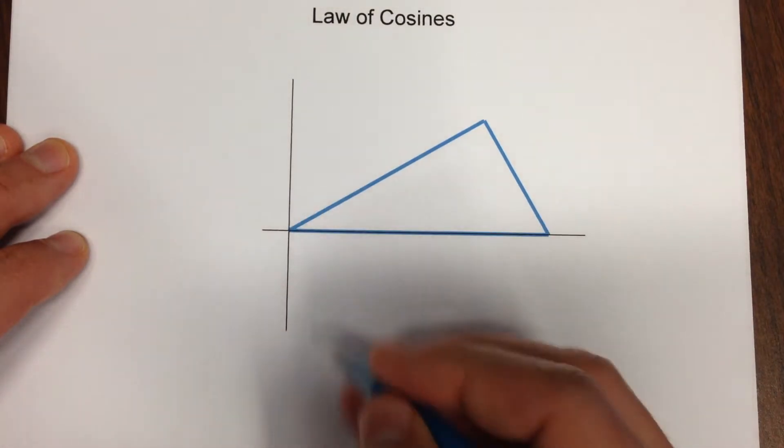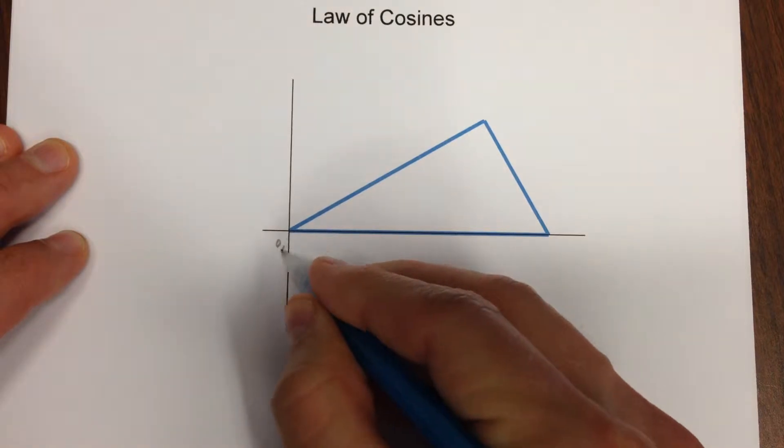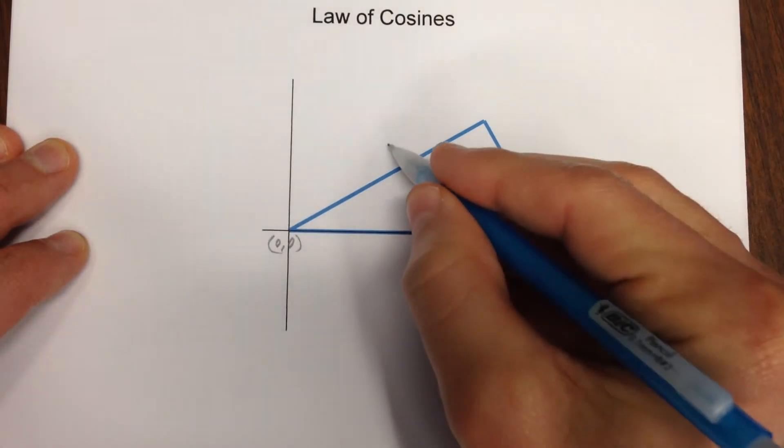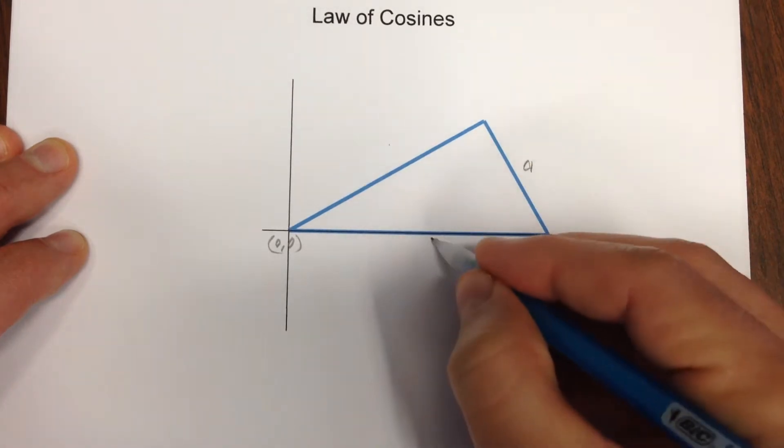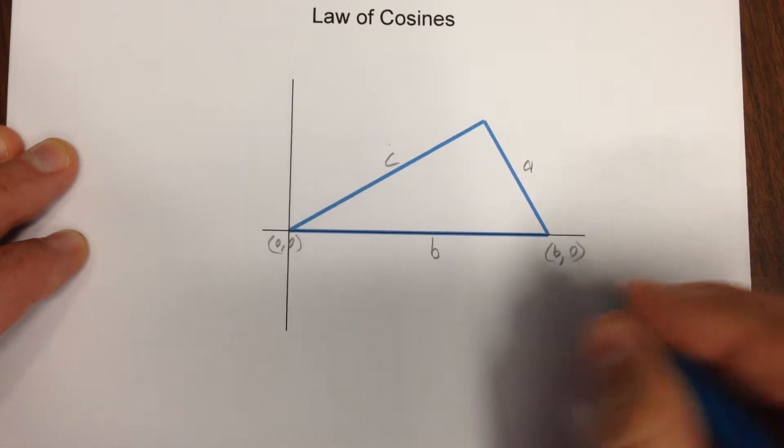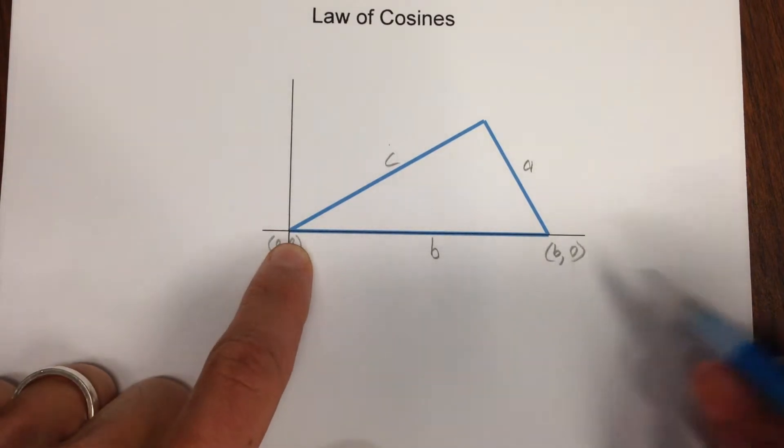Any triangle, if you want to put it on the Cartesian plane, I could put one coordinate at 0, 0, and then if I'm going to call the sides A, B is my standard, then C, this point would be B, 0. It's fair to put that along the x-axis in the positive direction.